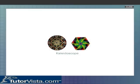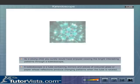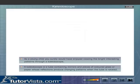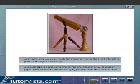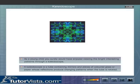Kaleidoscope. As a young child, you surely would have enjoyed viewing the bright interesting patterns through a kaleidoscope. A kaleidoscope is a tube containing mirrors and pieces of coloured glass or paper whose reflections produce changing patterns when the tube is rotated.